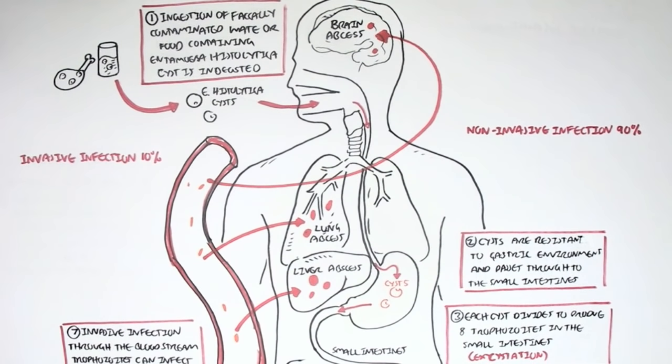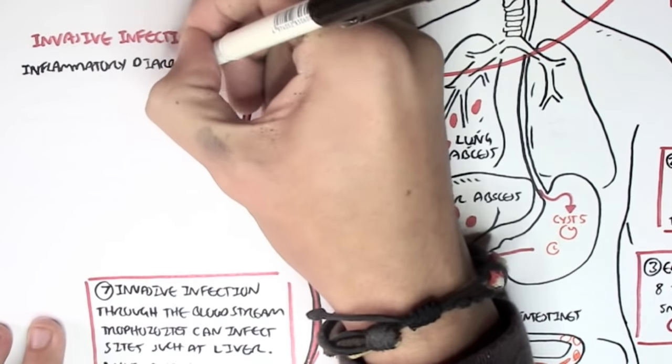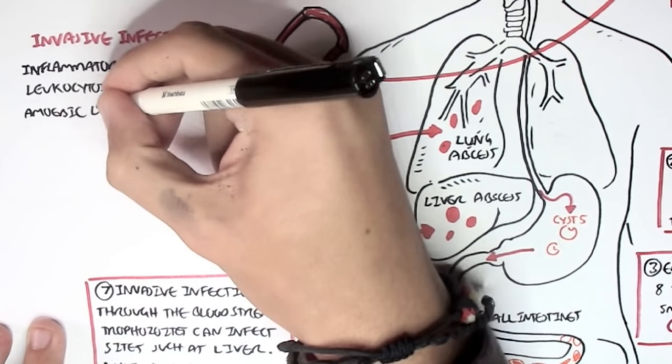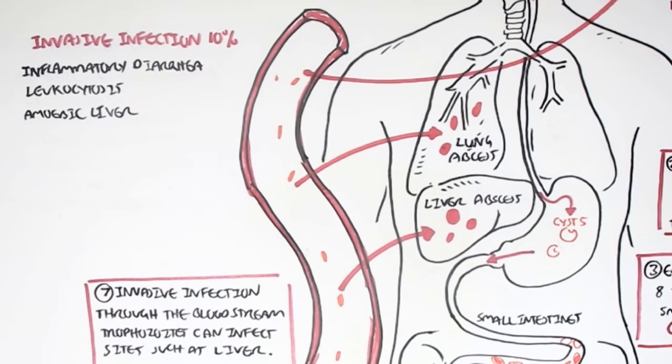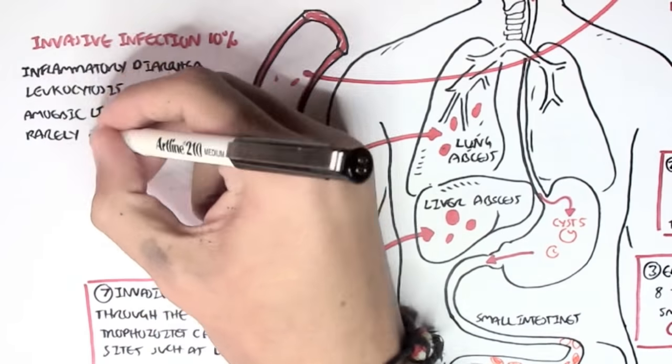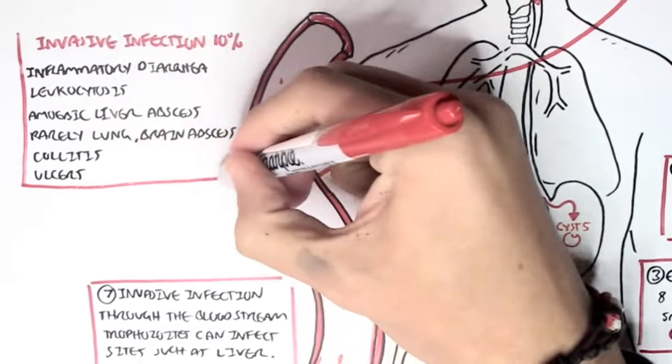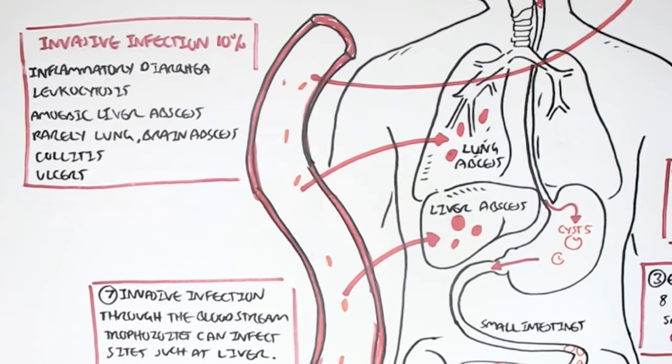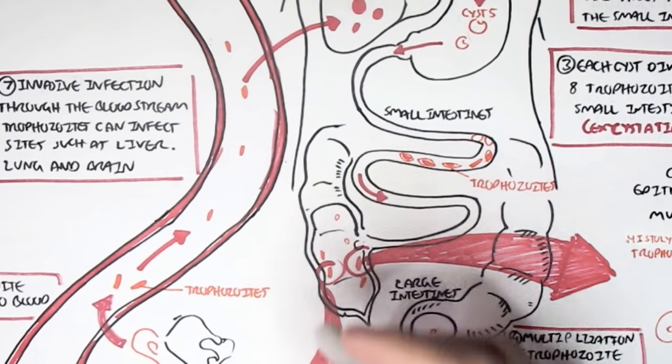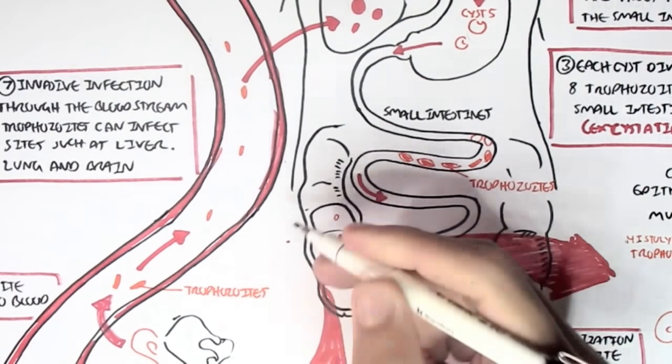It can cause definitely inflammatory diarrhea, which is a characteristic of amoebic dysentery. It can cause leukocytosis. It can potentially cause amoebic liver abscess formation. And, rarely, lung and brain abscesses. It can also cause colitis and ulcers, which is exactly the same thing, ulcerative colitis, which is actually a very big characteristic of amoebic dysentery, the ulcer formation in the large intestine, in the colon.